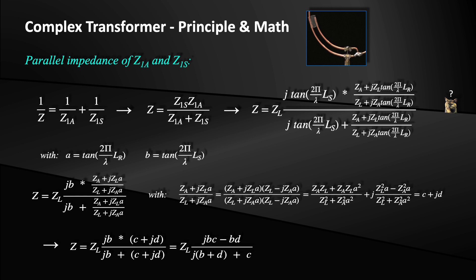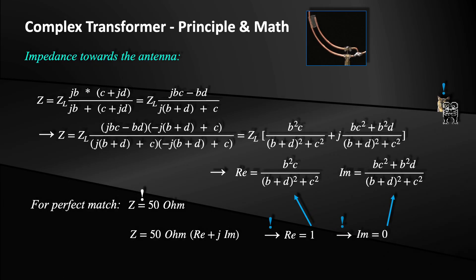The two impedances are complex, which means that they have a real part and an imaginary part. As you can see, the math behind impedance transformation may cause perspiration. But with a somewhat complex calculation, which you can also follow if you are interested, we can finally represent the impedance Z as a real part and an imaginary part. This is important because we would like to tune the real part to 50 ohms and the imaginary part to zero to get a perfect impedance match. If we now want to dimension a real matching network, then of course we use our little tool.